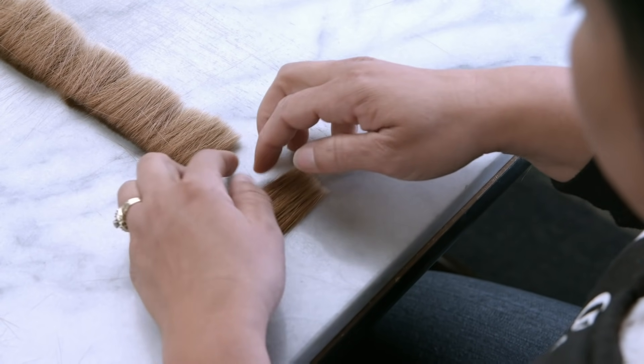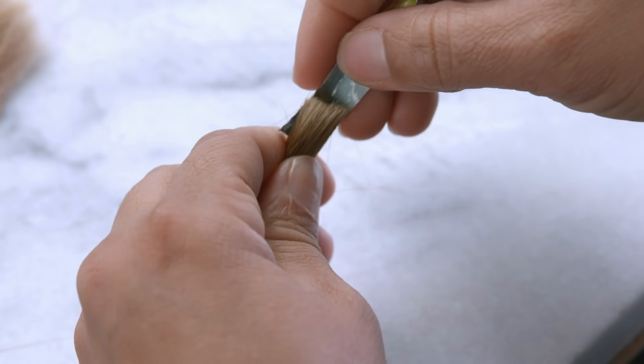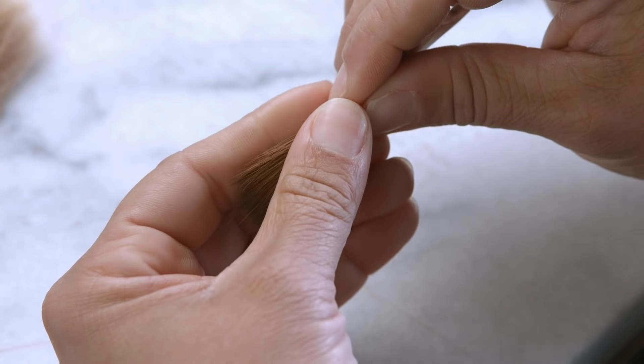The process begins with the initial steps of making the head of the paintbrush. First, a bundle of red sable hair is unrolled and straightened. Then enough hairs for the brush of the desired size are separated.